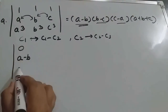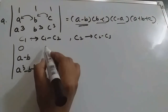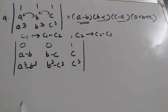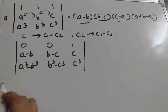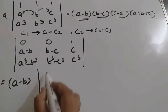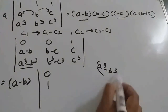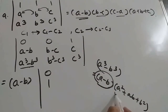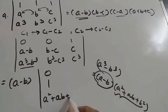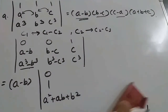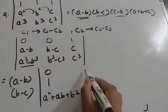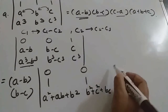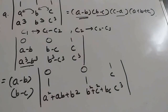Changing C1: C1 minus C2, and changing C2: C2 minus C3. We get 0, A minus B, A cubed minus B cubed, and 0, B minus C, B cubed minus C cubed in C2, and the last column remains the same. From the first column we can take A minus B common. Using the identity A cubed minus B cubed equals A minus B times A squared plus AB plus B squared, we are left with 0, 1, A squared plus AB plus B squared. Then from C2 taking B minus C common: 0, 1, and B squared plus BC plus C squared. R3 remains the same.